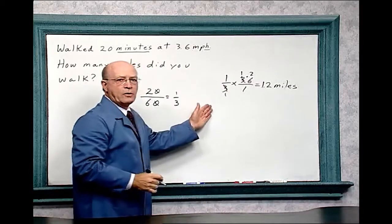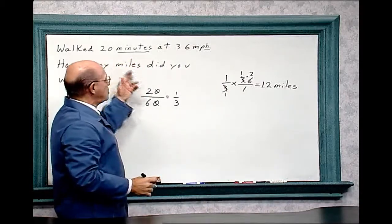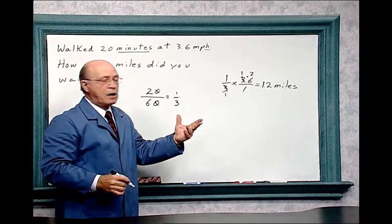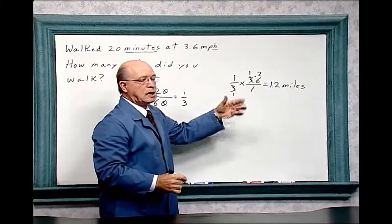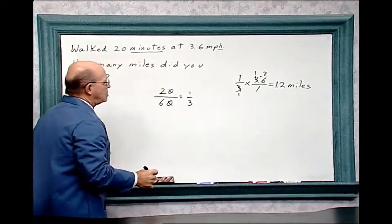So if you walk for 20 minutes, which is one-third of an hour, times 3.6 equals 1.2 miles. Let's do it the other way too.